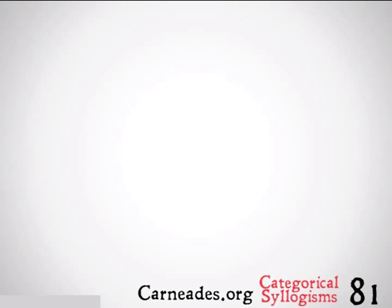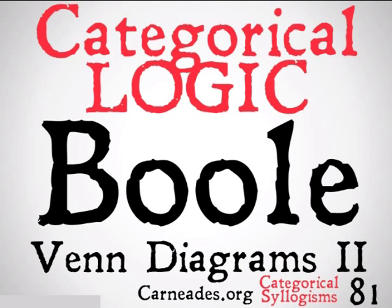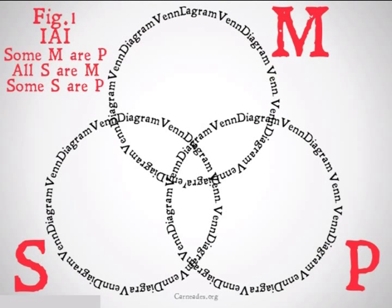Welcome back to 100 Days of Logic with 90 Second Philosophy and Carnetis.org. Today we're going to be continuing with categorical logic and categorical syllogisms, looking at Boole Venn Diagrams Part 2. In this case, we're going to be looking at X's on the line.